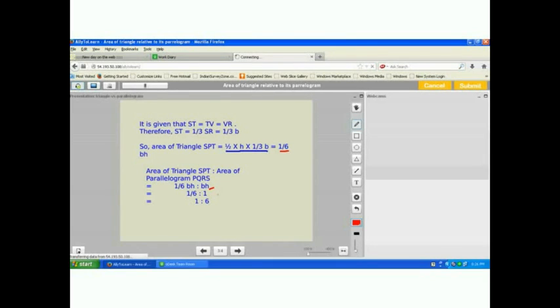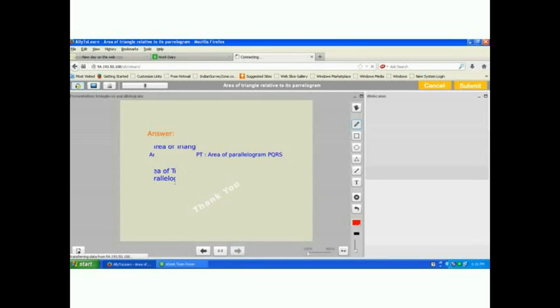So we get one-sixth is to 1. If we multiply it by 6, we get 1 is to 6. Thus, the ratio of the area of triangle SPT to area of parallelogram PQRS is 1 is to 6.